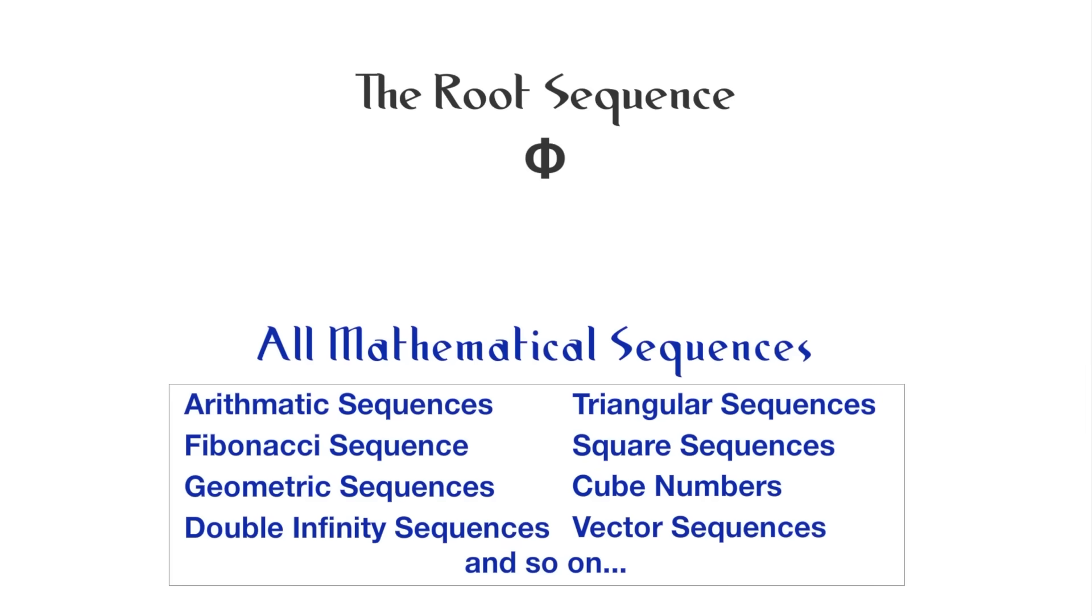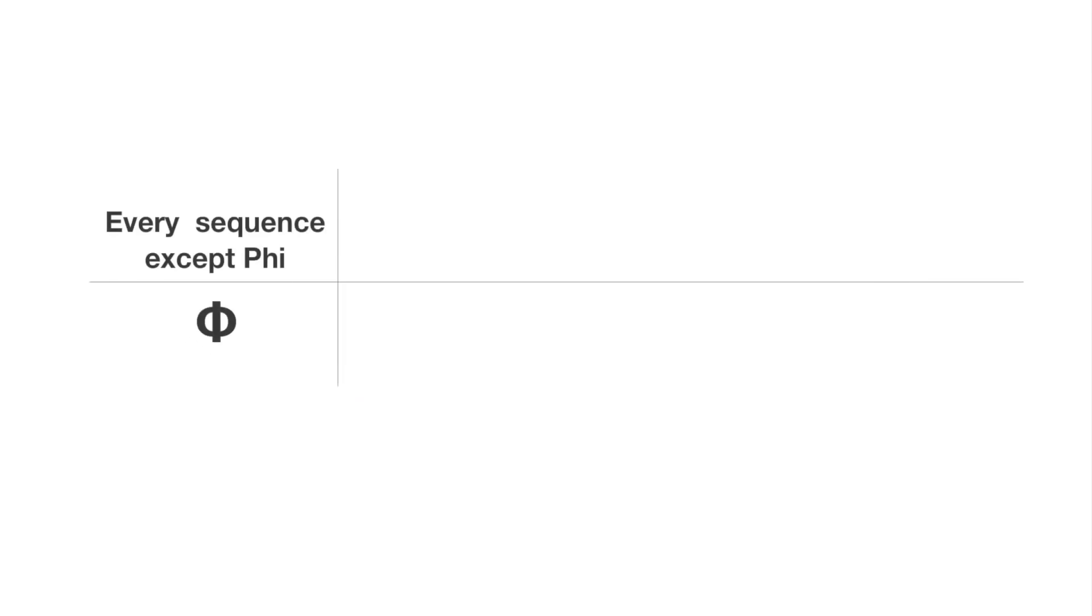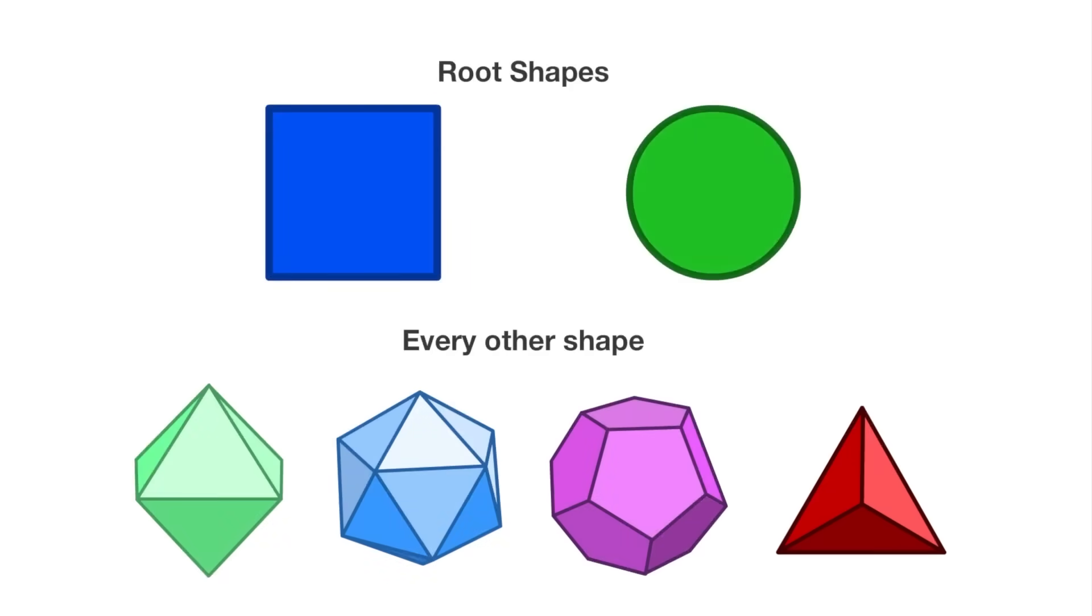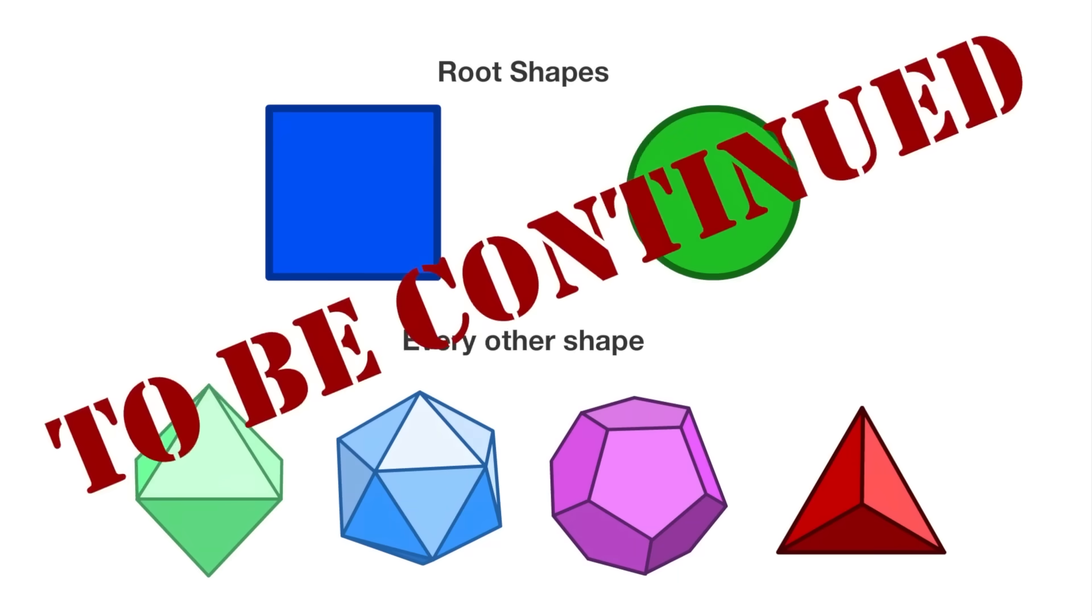Every mathematical sequence in existence needs a minimum of three numbers to figure out the sequence. Phi only needs two. It is the only one. Similar to how the circle and square are the source of all shape, but we'll get to that later on.